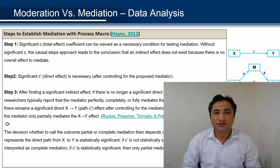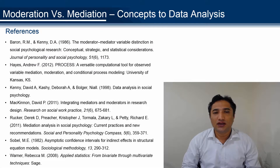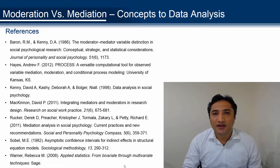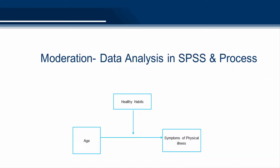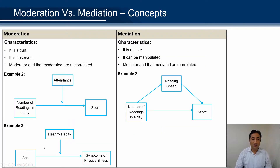The material of this video is prepared from the following articles — I strongly encourage you to go through them, as they are quite brilliant. At this point the basics have been covered. Now I'm going to run moderation and mediation in SPSS, Process, and AMOS. First, I'm going to run moderation in SPSS. For this, I have selected example 3: age predicts the symptom of physical illness and healthy habits moderate their relationship. Age is the independent variable, symptom of physical illness is the dependent variable, and healthy habits is the moderating variable.